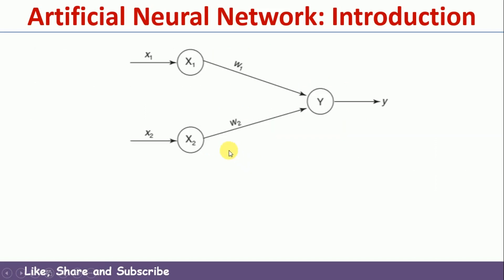Let's take a simple example to understand a simple Artificial Neural Network. In this network, we have two layers: the first is called the input layer and the other is called the output layer — these are the minimum two layers every Artificial Neural Network has. In the input layer, we have two neurons denoted by X1 and X2, and Y is the output neuron. So the output layer has one neuron and the input layer has two neurons, giving us three neurons total in this network. X1 and X2 are the inputs, and Y is the output of the output neuron.